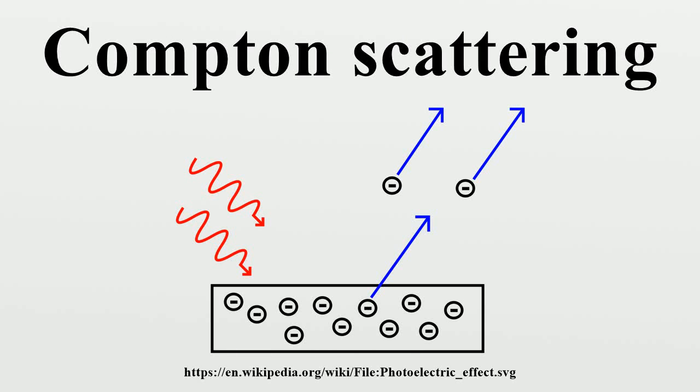Compton scattering is the inelastic scattering of a photon by a charged particle, usually an electron. It results in a decrease in energy of the photon, called the Compton effect. Part of the energy of the photon is transferred to the recoiling electron.